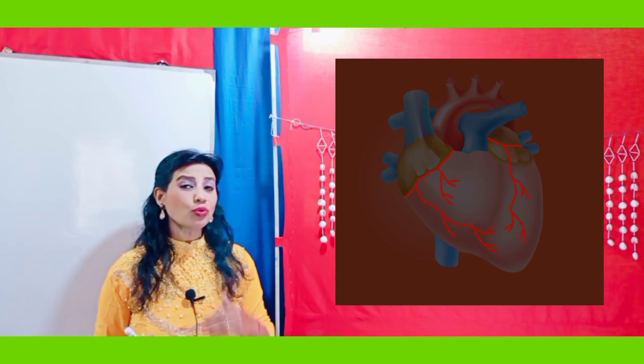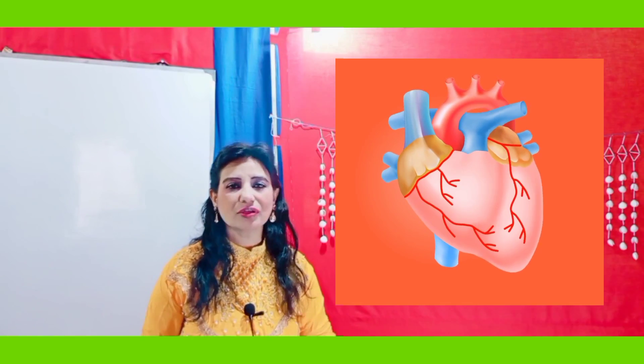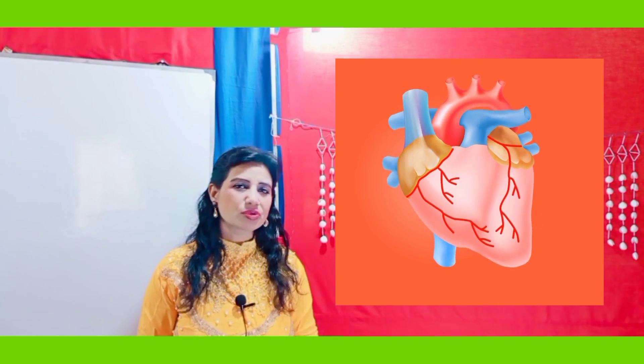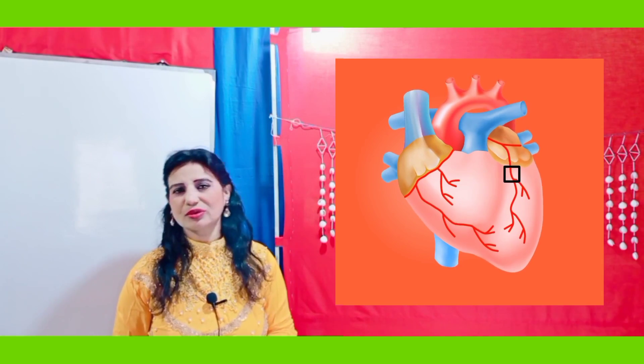Once blood has entered through the pulmonary veins — brought from the lungs — it will pass from the left atrium to the left ventricle. There is an opening guarded by a valve. What is the function of the valve? This valve has two cusps, so it is called a bicuspid valve. The function of the valve is to regulate blood flow in one direction so that it does not travel in the opposite direction.